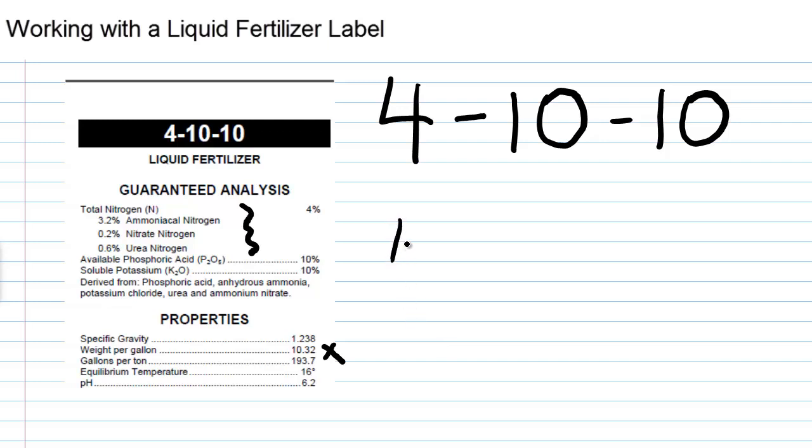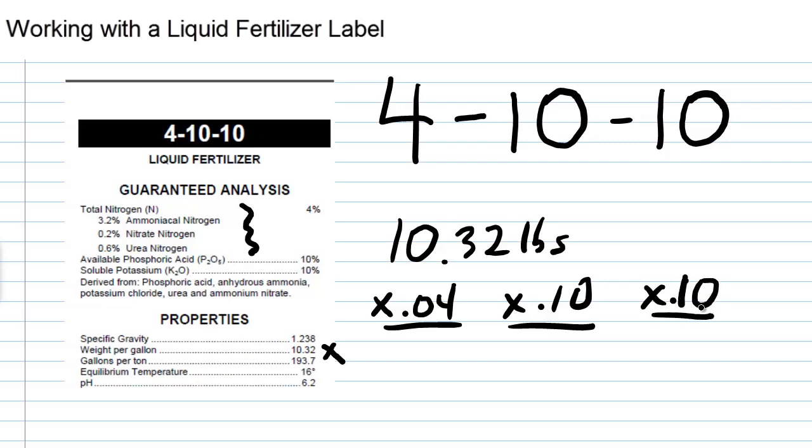So right off the bat, if every gallon weighs 10.32 pounds, we can determine how much nitrogen, phosphate, and potash is in a gallon of fertilizer. We're taking 10.32 times 0.04, 10.32 times 0.1, 10.32 times 0.1. See that? So we do our math.